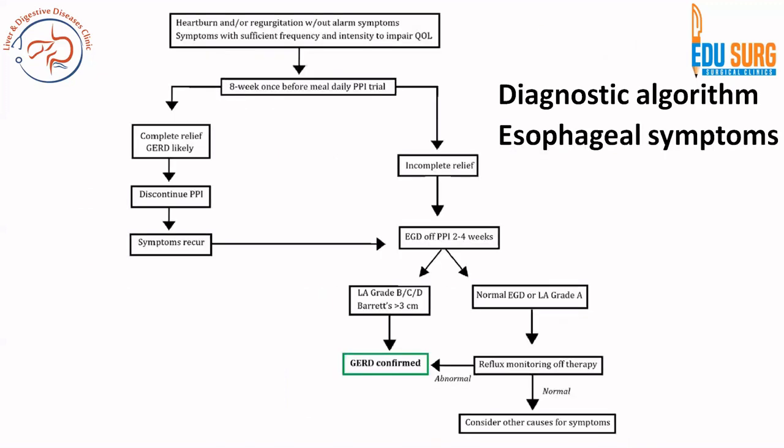For the diagnostic algorithm, there are two pathways. In patients with typical reflux syndrome without alarm symptoms but with impaired quality of life, the first step is to give PPI for 8 weeks — esomeprazole is the drug of choice, once daily before meals. If relief occurs, this confirms GERD; after 8 weeks, attempt to discontinue the PPI. If symptoms recur or there is no relief, perform upper GI endoscopy after stopping PPI for 2–4 weeks if possible. If erosive reflux disease is found, grade it per Los Angeles classification; grades B, C, D or Barrett's esophagus more than 3 cm confirms the diagnosis.